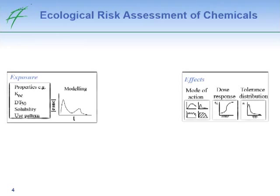Before that, I would like to give a quick introduction to the background of ecological risk assessment of chemicals, which is, at the end of the day, a relatively simple process. What you need to do is characterize the exposure side — usually by applying mathematical models to predict which concentration of a certain chemical may occur in the environment when it is used for a particular purpose.